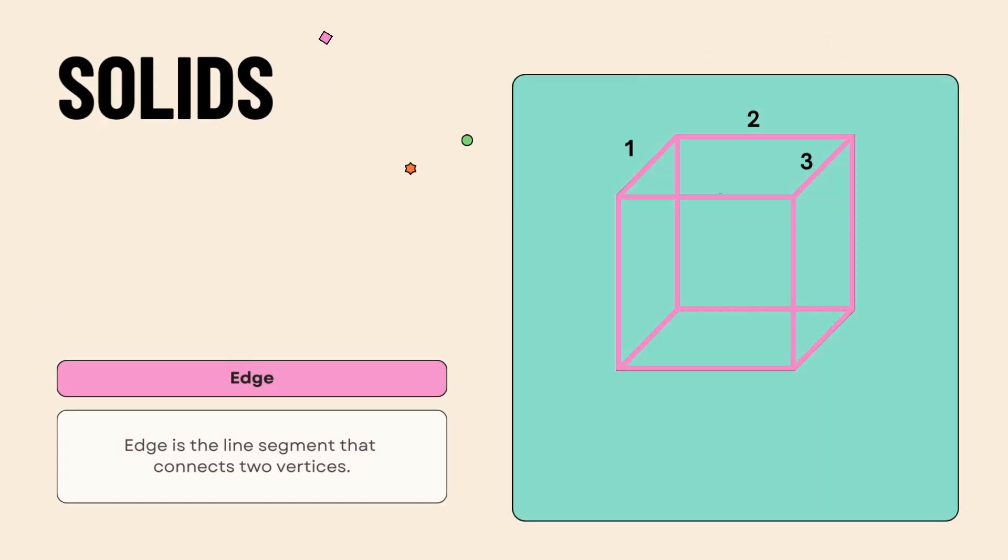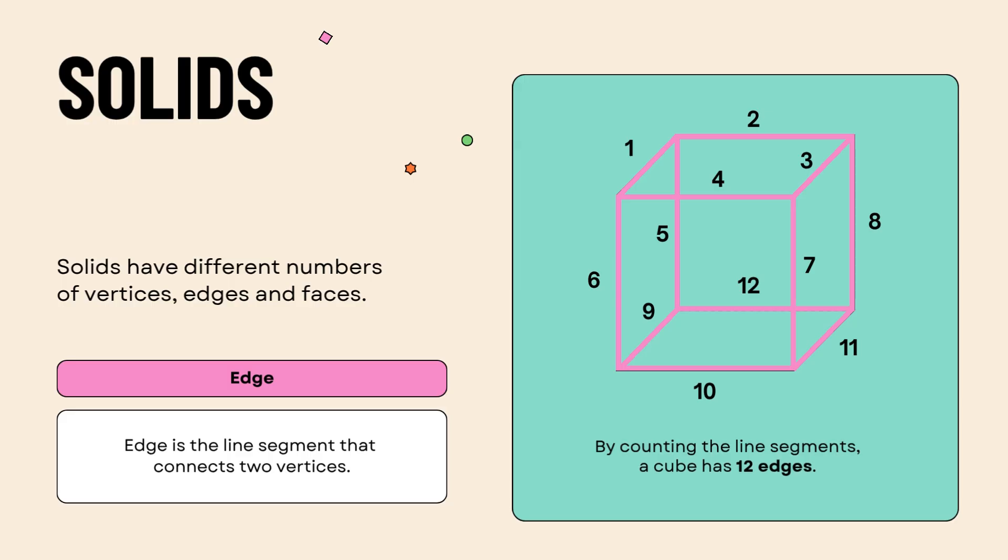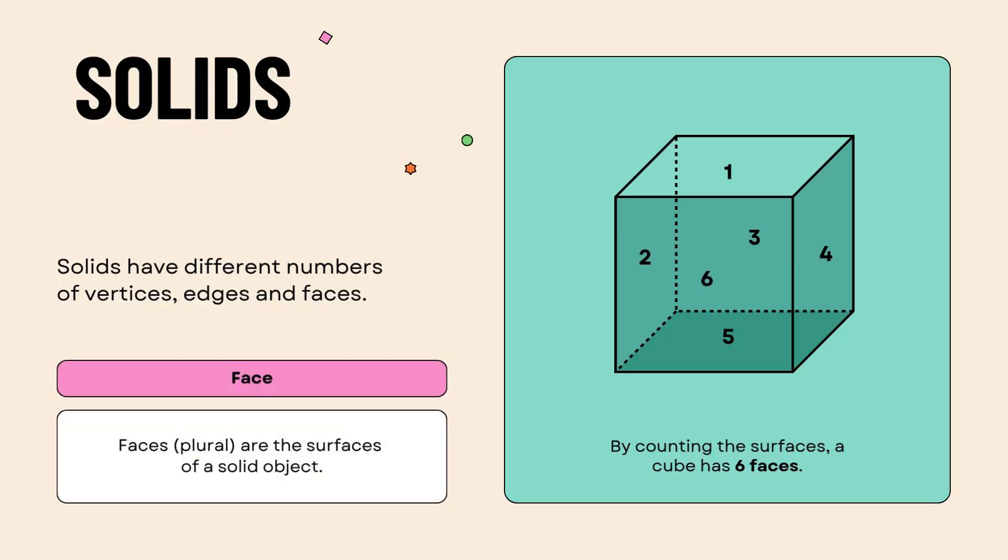Generally, solids have different numbers of vertices, edges and faces. Edge is the line segment that connects two vertices. By counting the line segments, a cube has 12 edges. This completes the cube's geometric description.